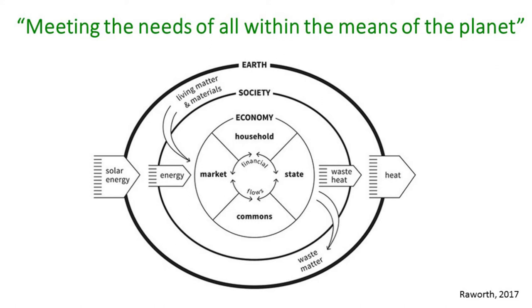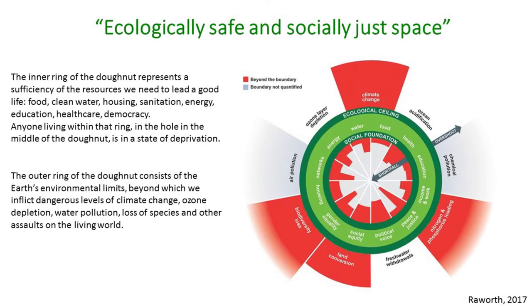Using this model, researchers have identified what is ecologically safe and socially just space. In areas of climate change, nitrogen and phosphorus loading, land conversion, and biodiversity losses, humanity has exceeded acceptable thresholds — what is called planetary boundaries. Looking at the inner social circle, areas such as health, peace and justice, political voice, social equity, and gender equity are also not currently sustainable.